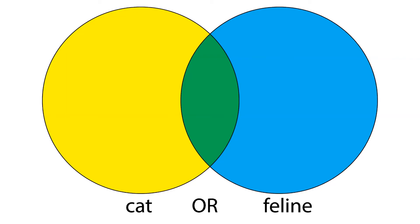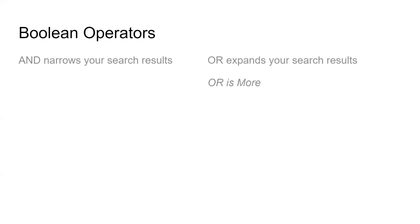Here we can see that the Boolean operator OR expands our search results. To recap, AND narrows your search results while OR expands them. It is helpful to remember the phrase OR is more for this.